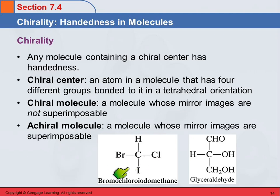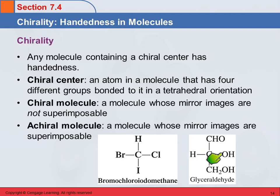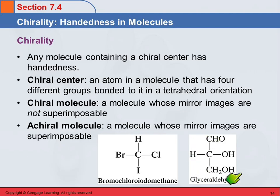Bromo-chloro-iodo-methane is an example of a chiral molecule. And glyceraldehyde is also an example. Here, the carbon in the center has four different things attached to it. We have one hydrogen and one hydroxy group. Up here we have a carbonyl group — carbon with a hydrogen double bonded to oxygen. Down here we have CH2 and a hydroxyl group. So each of the things bonded to this carbon are different, and that's the key part of something being chiral.